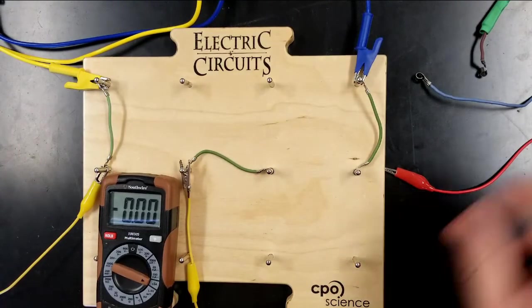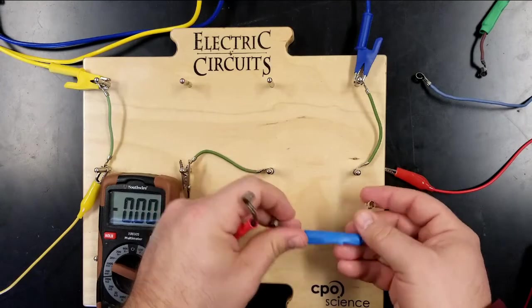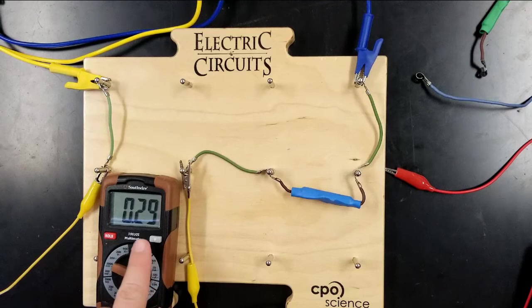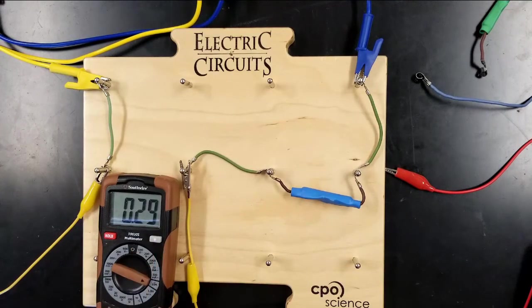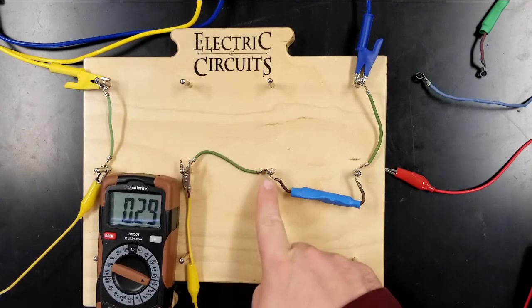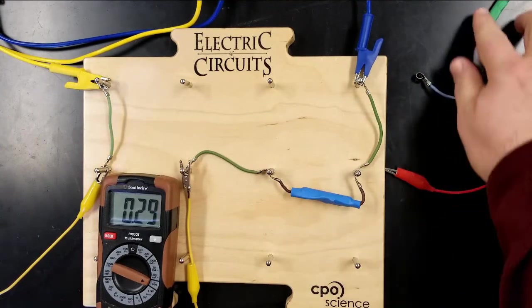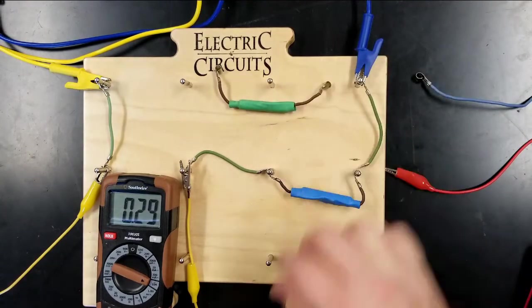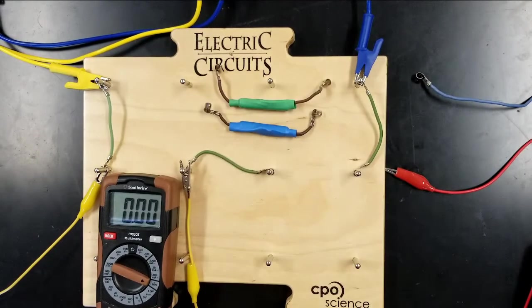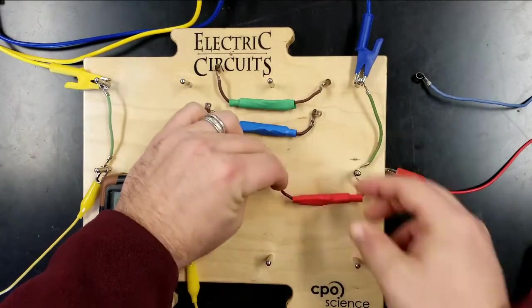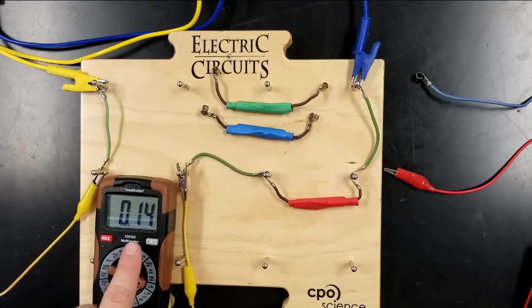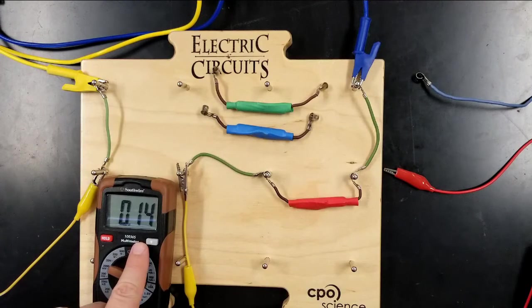I'm not going to leave that connected very long because that'll get hot. 0.56 for the green resistor. If I connect the blue resistor in here, same circuit, same everything else, notice that I get a smaller current. And so what that tells me is that the blue resistor has a higher resistance. It doesn't let charges go through it as well compared to the green resistor. Now I'm going to replace this with the red resistor.